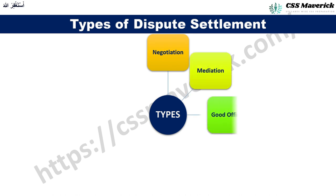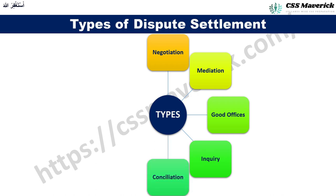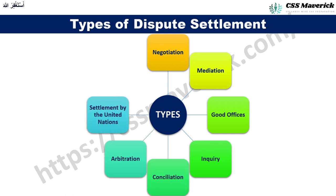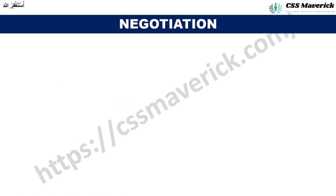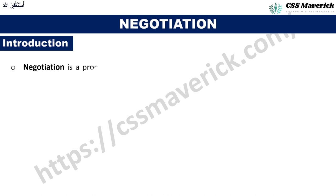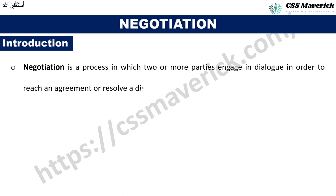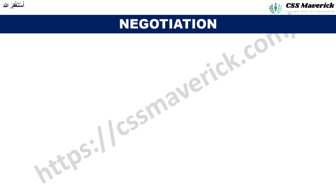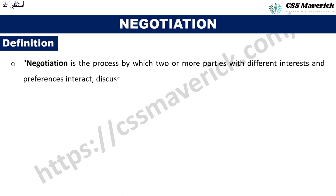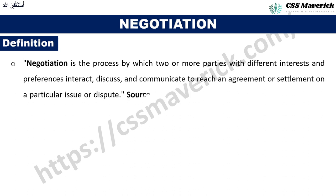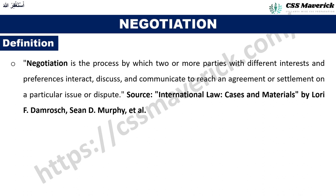The types of dispute settlement include negotiation, mediation, good offices, inquiry, conciliation, arbitration, settlement by the United Nations, and the International Court of Justice. Starting with negotiation: negotiation is a process in which two or more parties engage in dialogue to reach an agreement or resolve a dispute. It is a form of peaceful settlement and an alternative to the use of force. Negotiation is defined as the process by which parties with different interests interact, discuss, and communicate to reach an agreement on a particular issue.